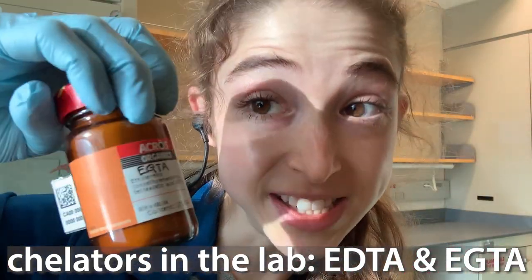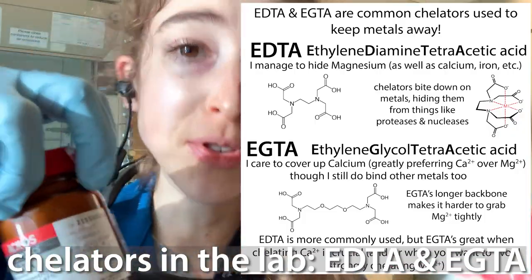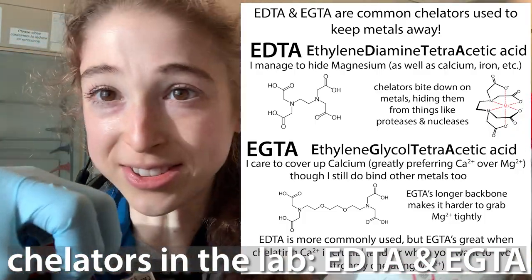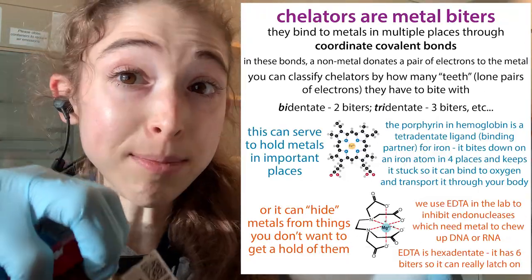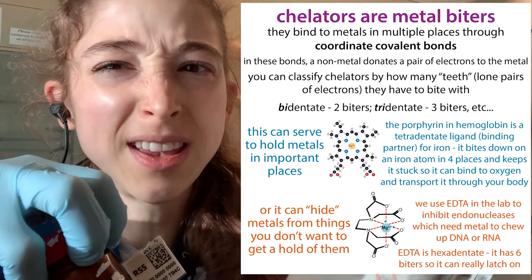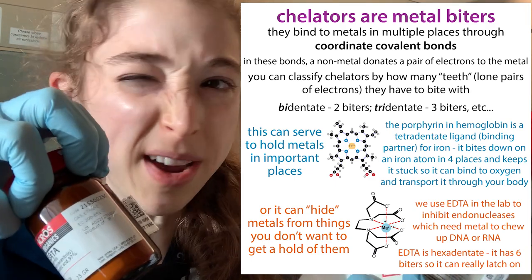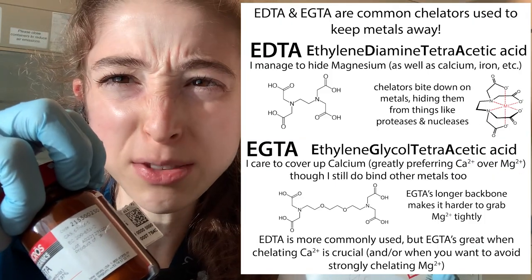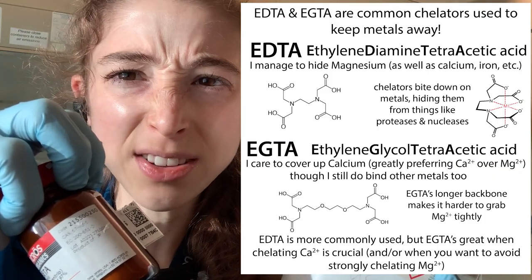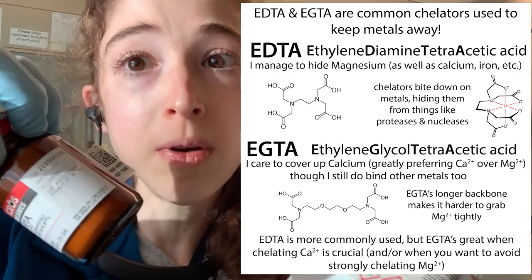EDTA and EGTA — both of these are chelators. That means they can keep metals away. So what's the big difference, anyway? And when do you use what? And how do they work?